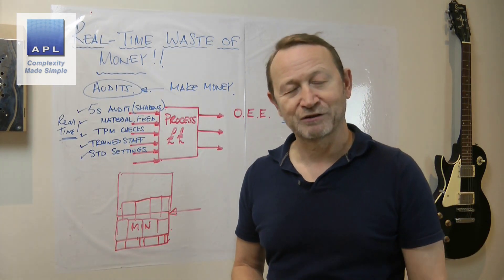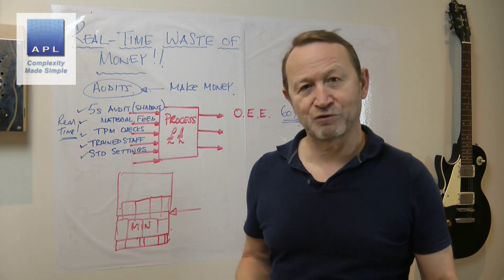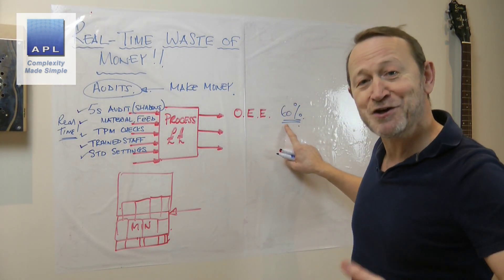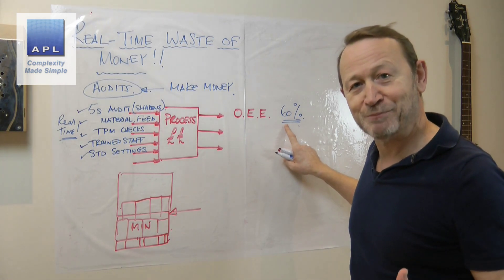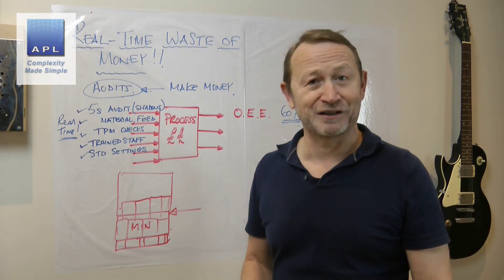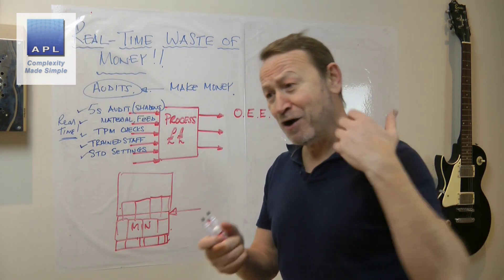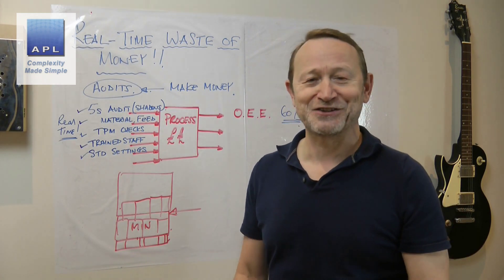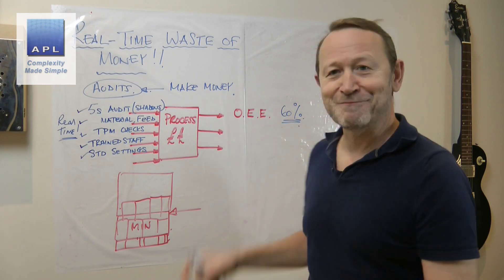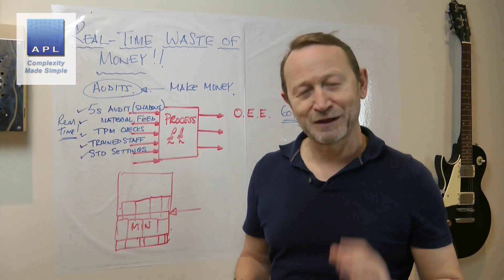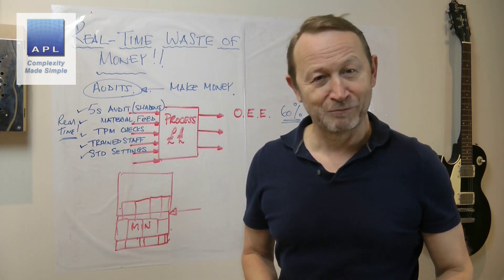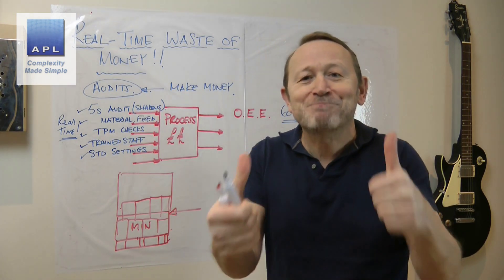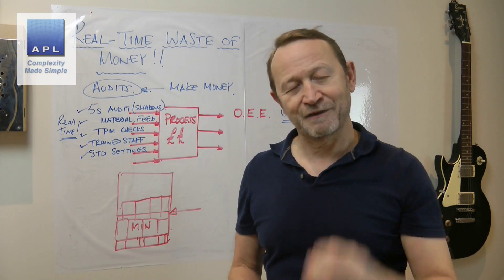OEE doesn't need to be collected in real time — you can't influence it in real time. You have to beat it to death to get above sixty percent; you have to be brilliant, project after project, day after day. In the next five minutes you cannot do anything to make your OEE shoot up to eighty percent. Please save your money. Please concentrate on real money-making controls. Concentrate on the inputs to the process — then you'll make bucket loads of cash and be successful, and that's what we want you to do.